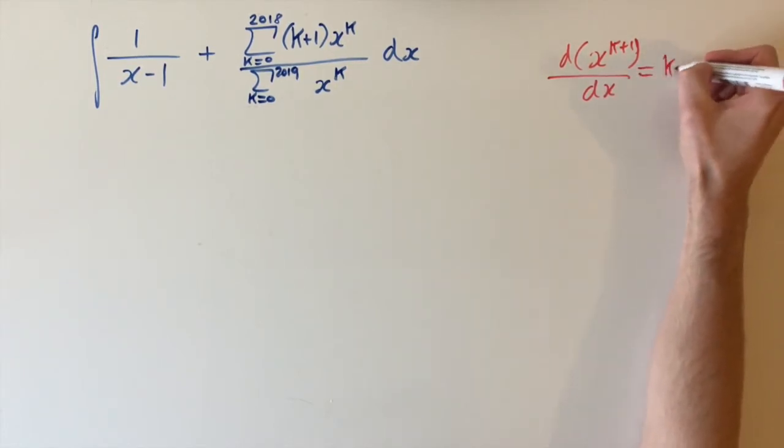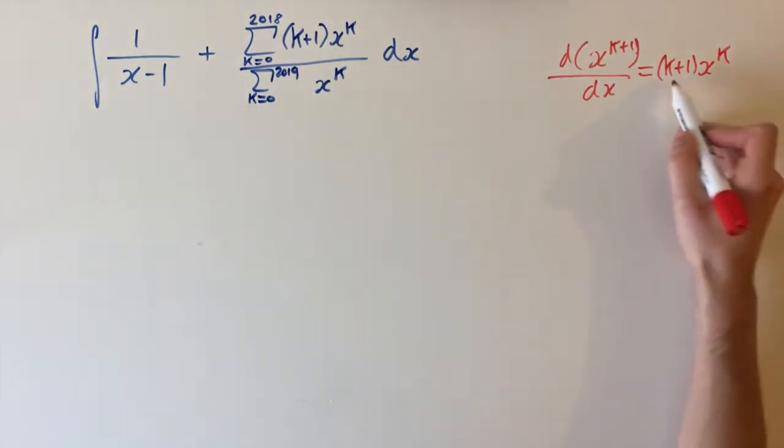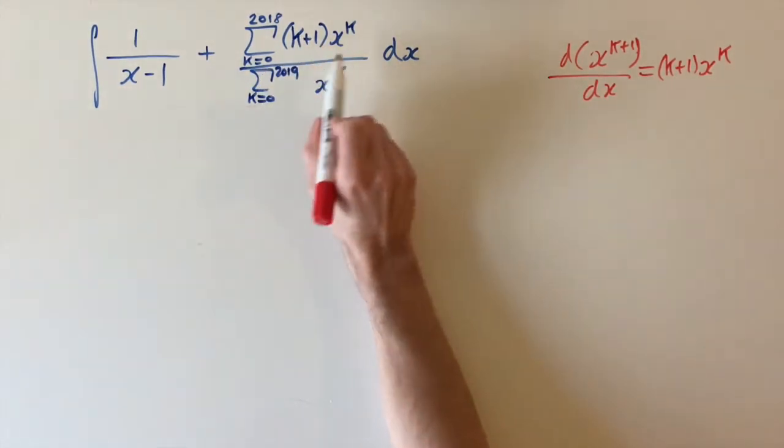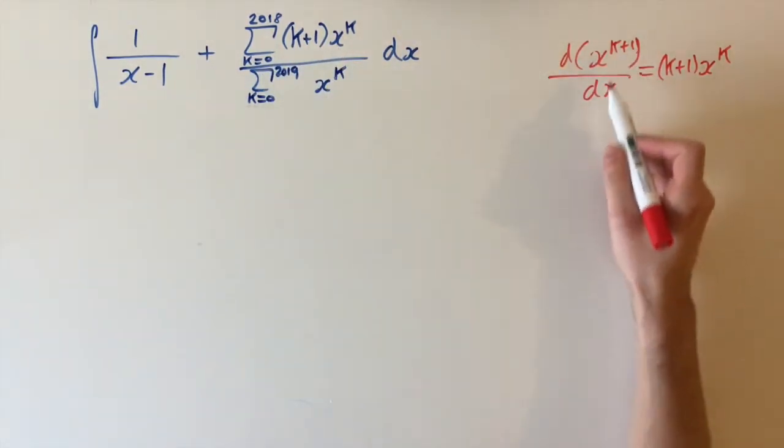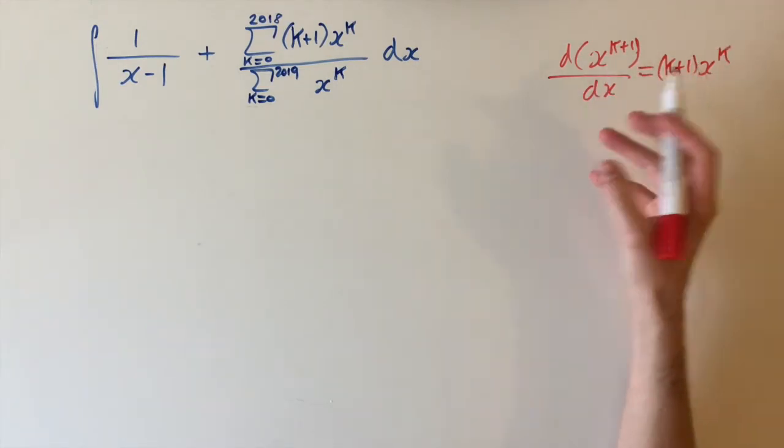You just bring down the power. We have k plus 1. And then you multiply this by x to the k. And this is exactly the term that we have in our series. So it tells us that the top series is kind of a derivative of some kind. We can actually express this as a derivative of another series.